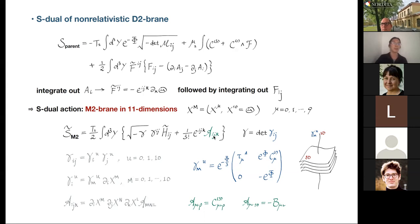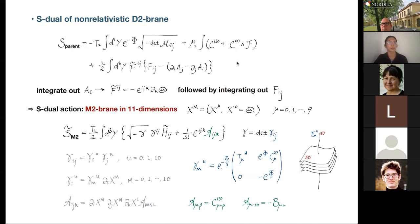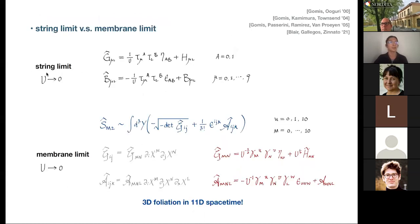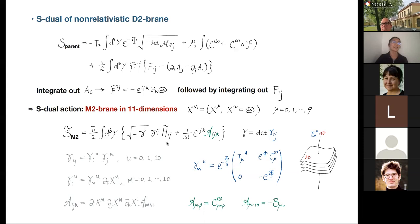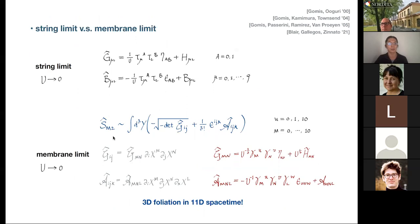There are two different limits to consider. One leads to the fundamental string action or D-branes in non-relativistic string theory — the string limit — which involves sending u → 0. There's also a different limit to get the Galilean membrane action from the relativistic membrane action in 11 dimensions — the membrane limit. Instead of tau_mu^A we have gamma_{mu}^u where u is a three-dimensional index, and sending u → 0 induces a three-dimensional foliation structure.